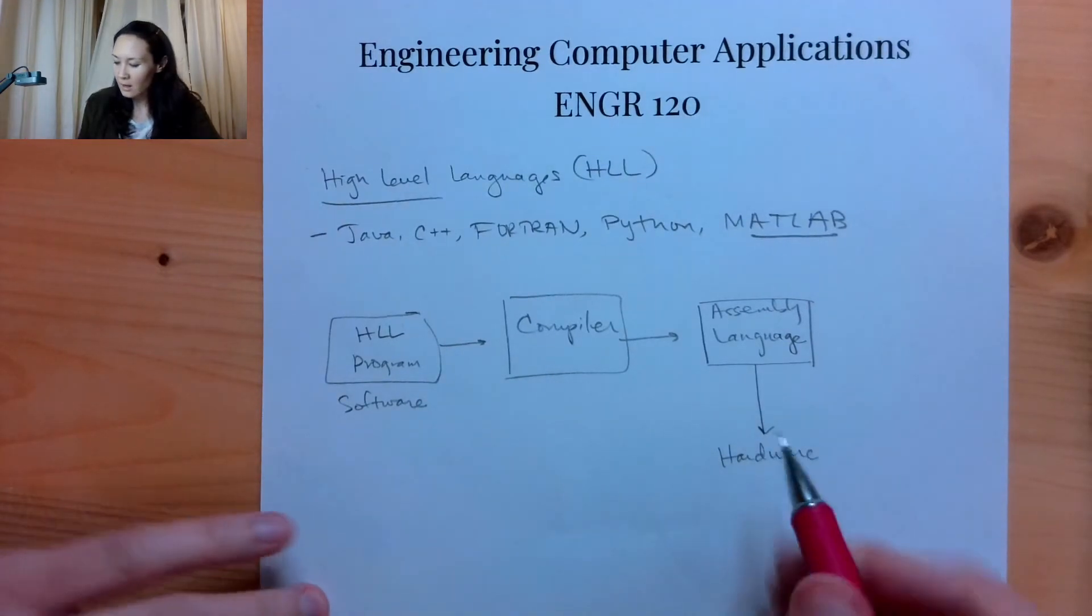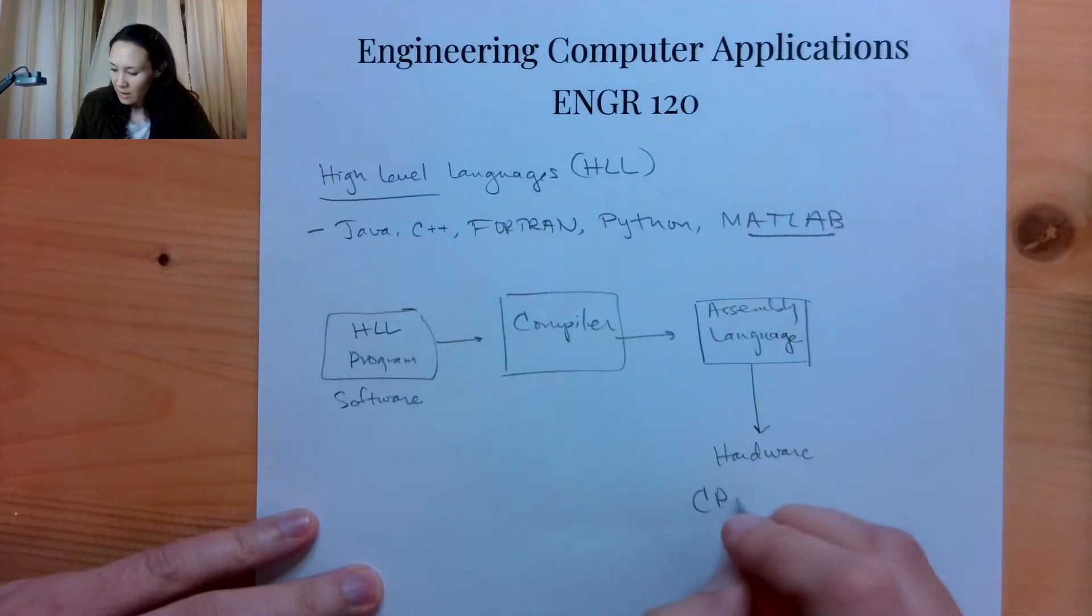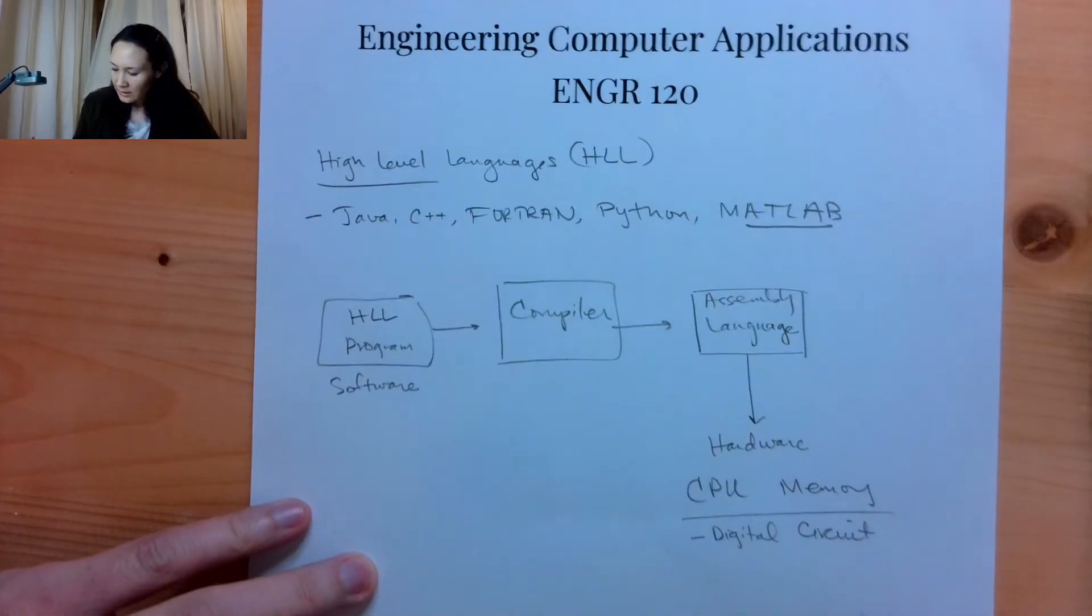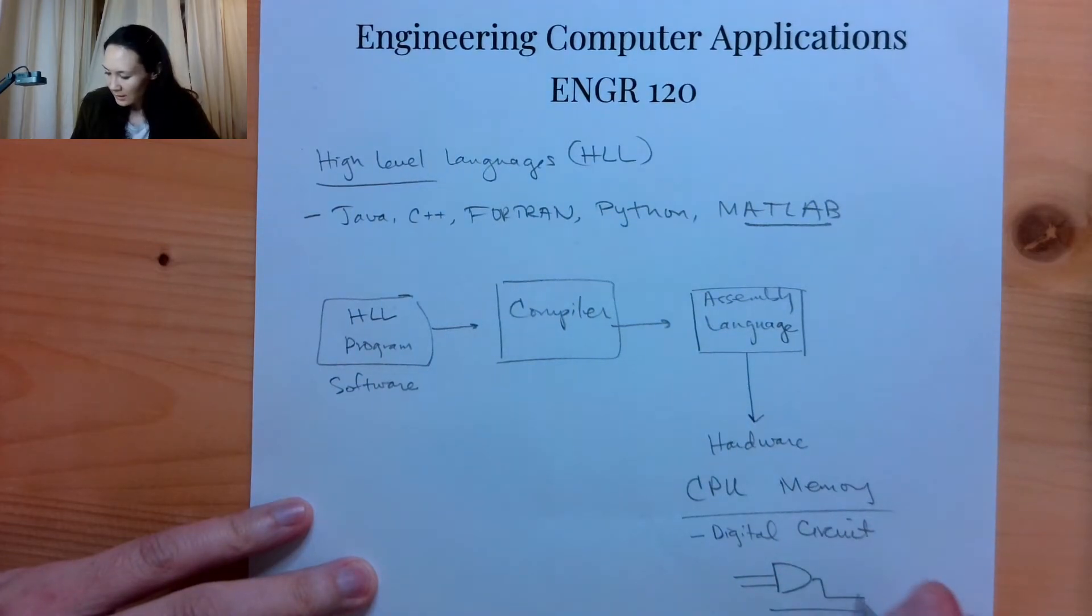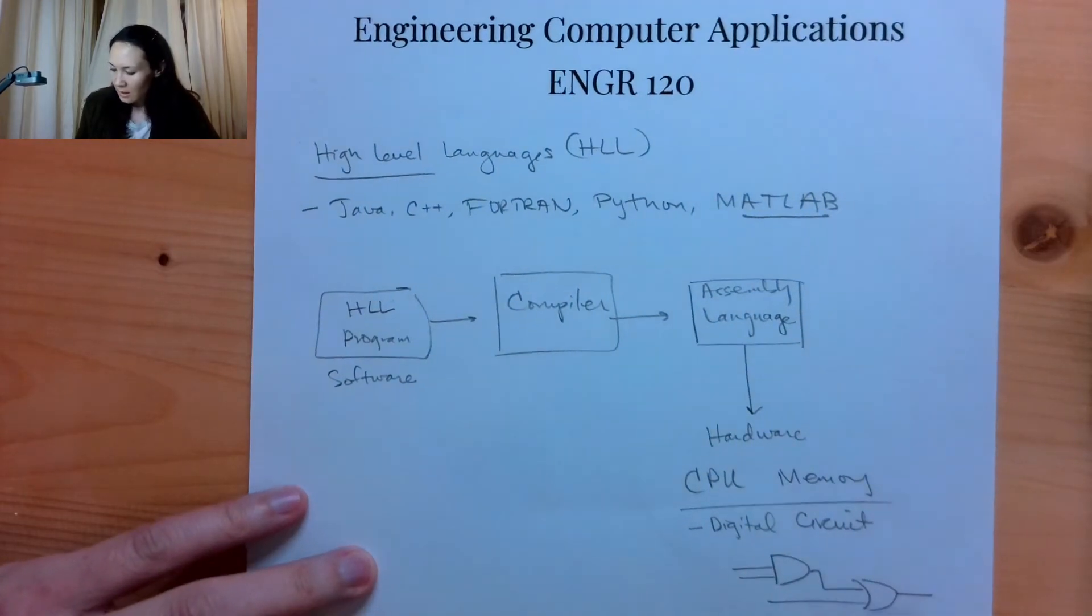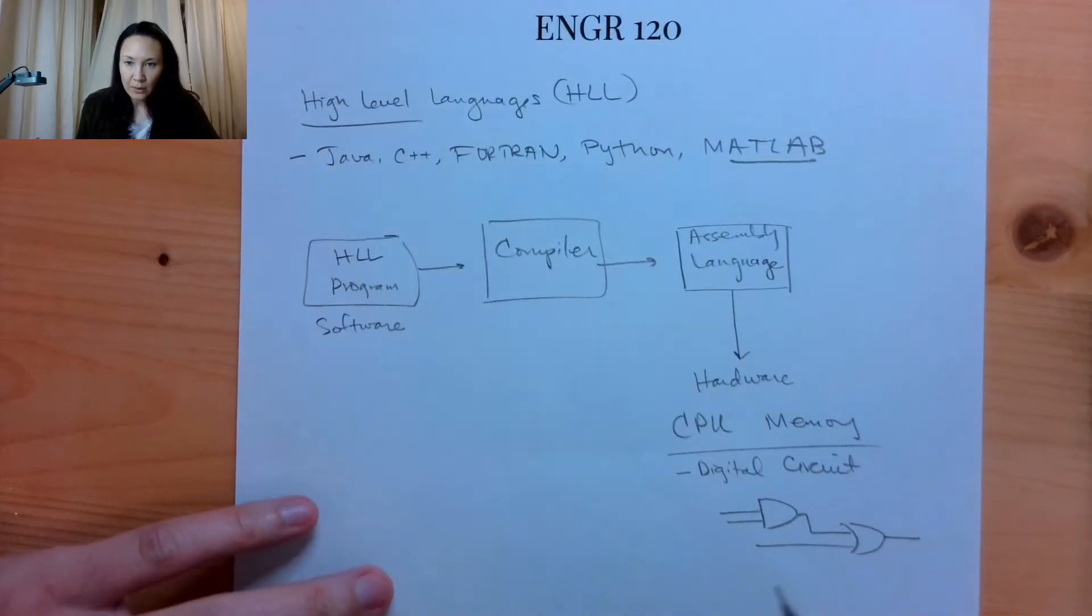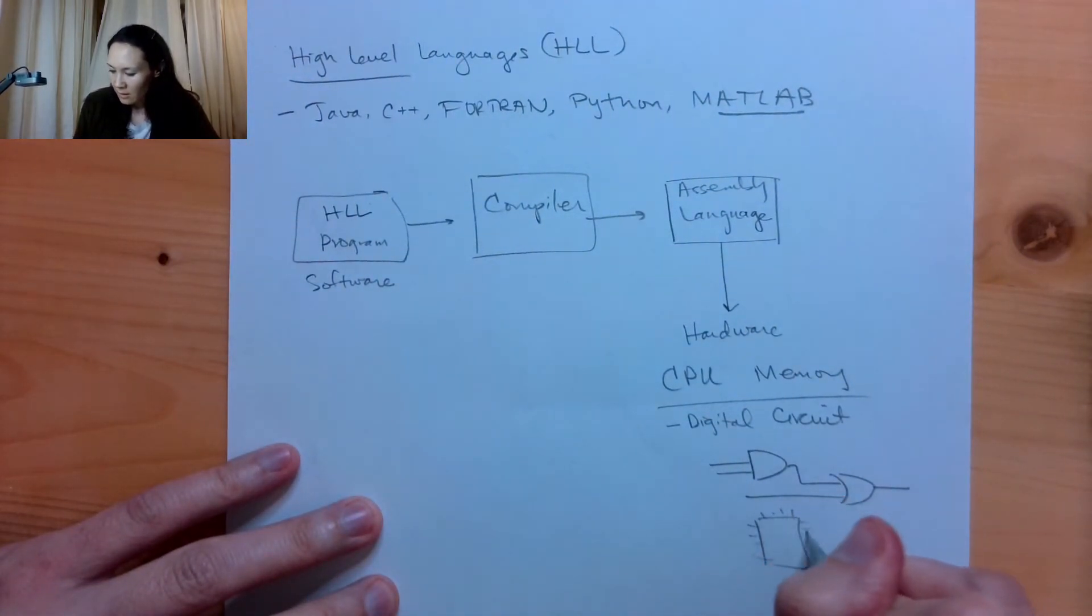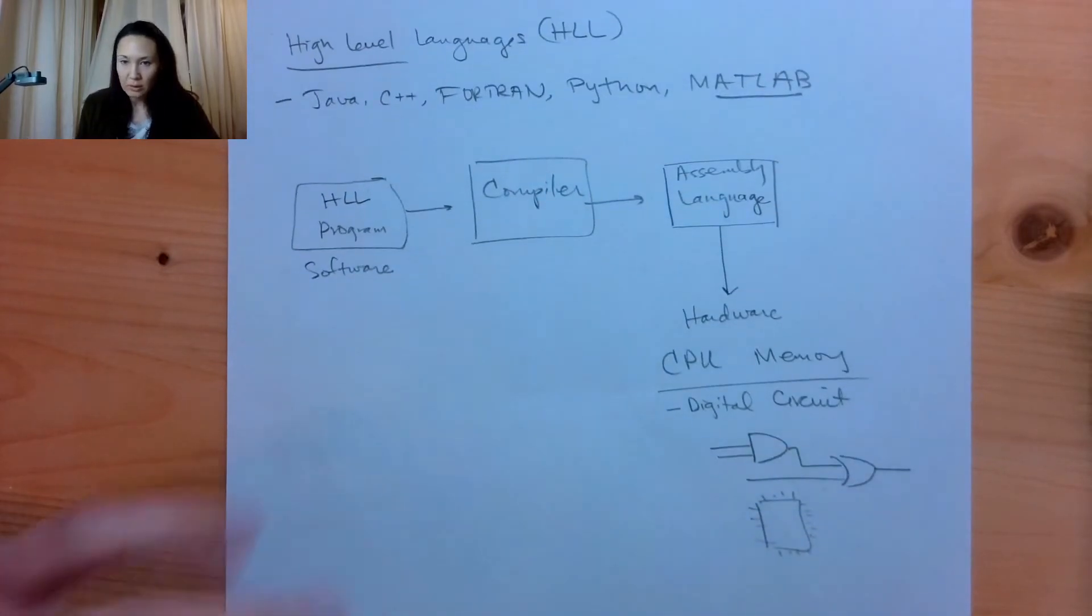So the hardware consists of, we have a CPU and memory, and these things are composed of digital circuits. And these digital circuits, these are logic gates. Here's the symbol of some logic gates, kind of like this. And there's millions of these that are burned actually on a computer chip, and this is on a motherboard in your computer.